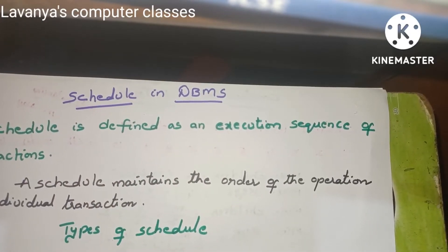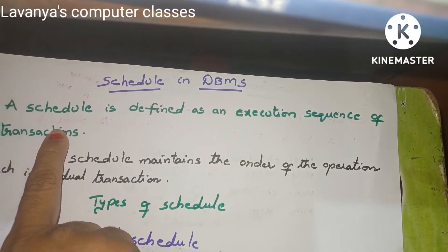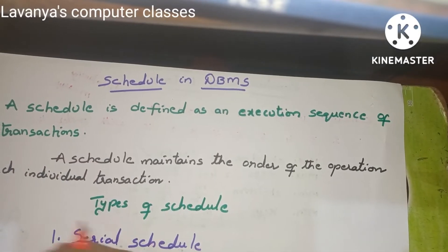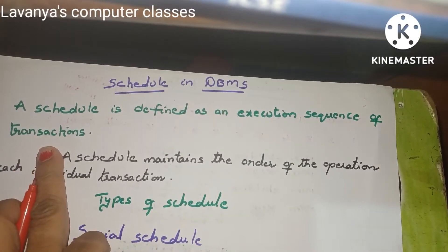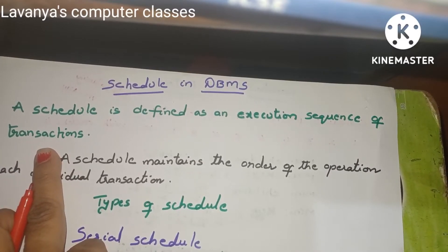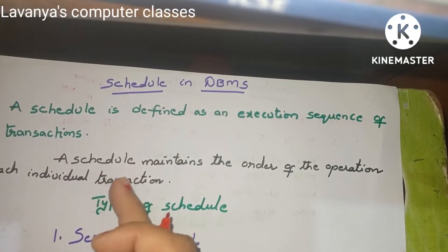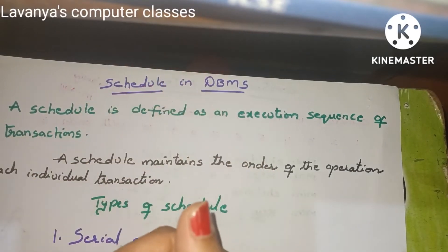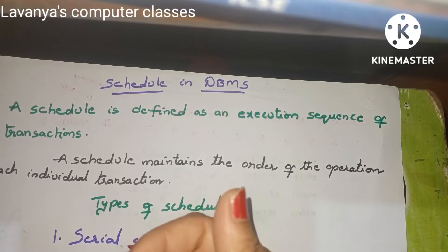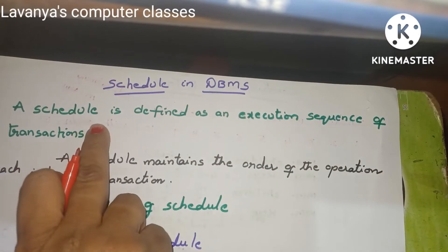In transactions, there is a terminology called schedule. A schedule is defined as an execution sequence of transactions. A transaction is a list of actions — we perform a set of actions one after another. We need some execution sequence because we have to execute steps in a sequence format. The execution sequence of transactions is known as a schedule.